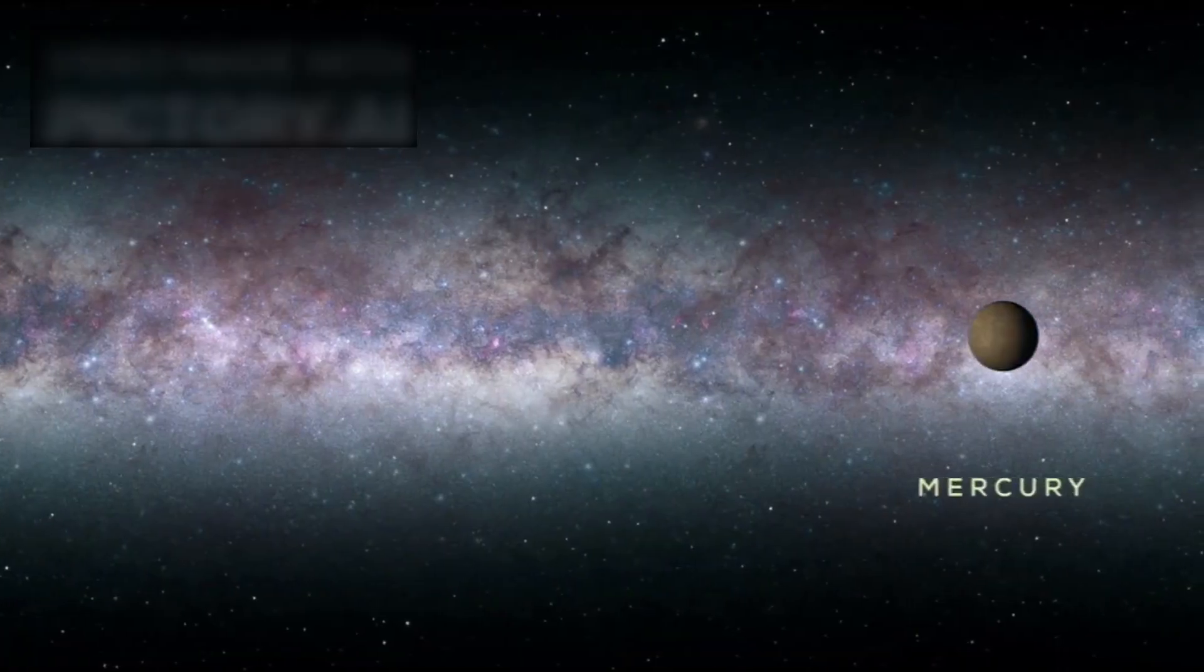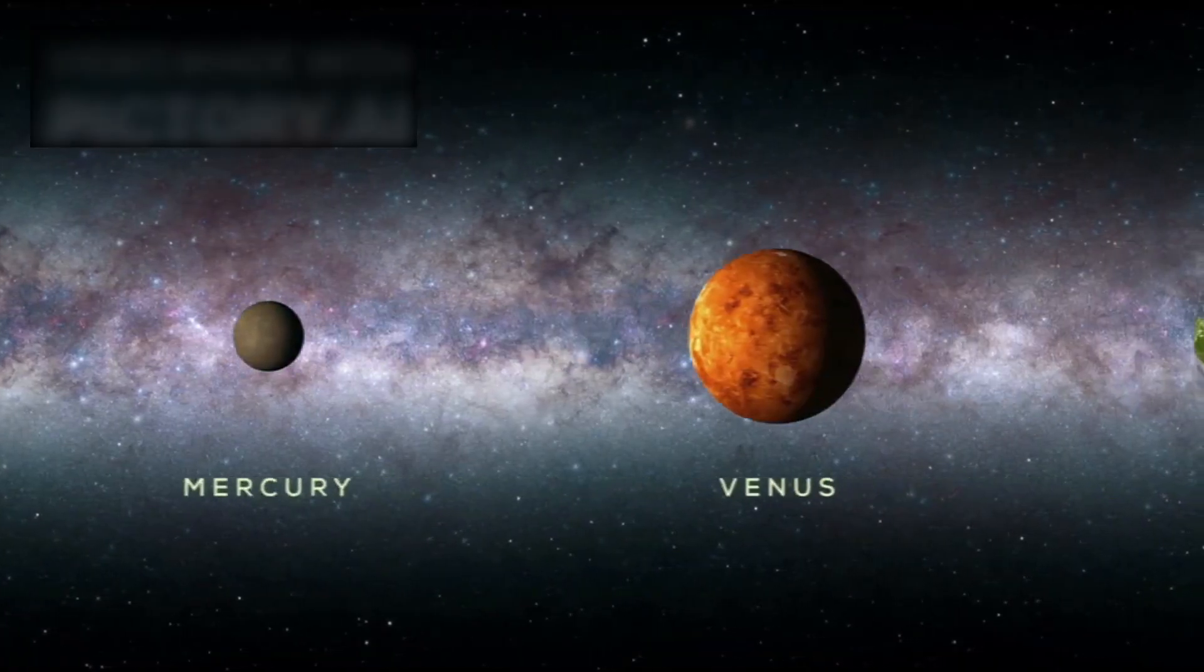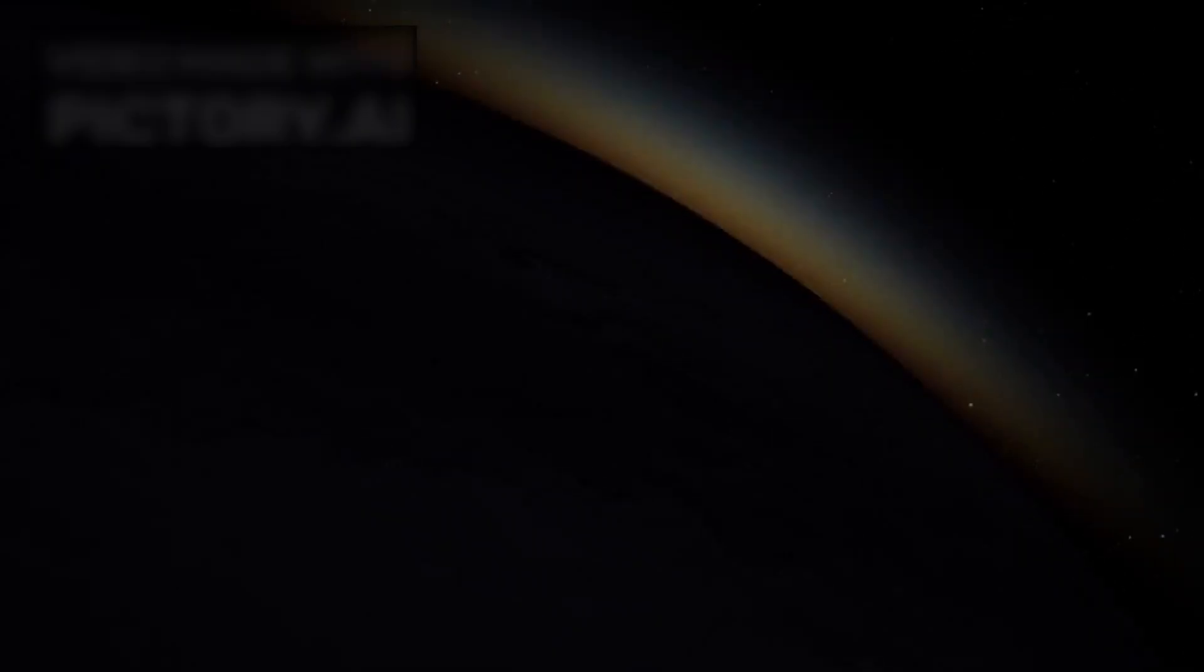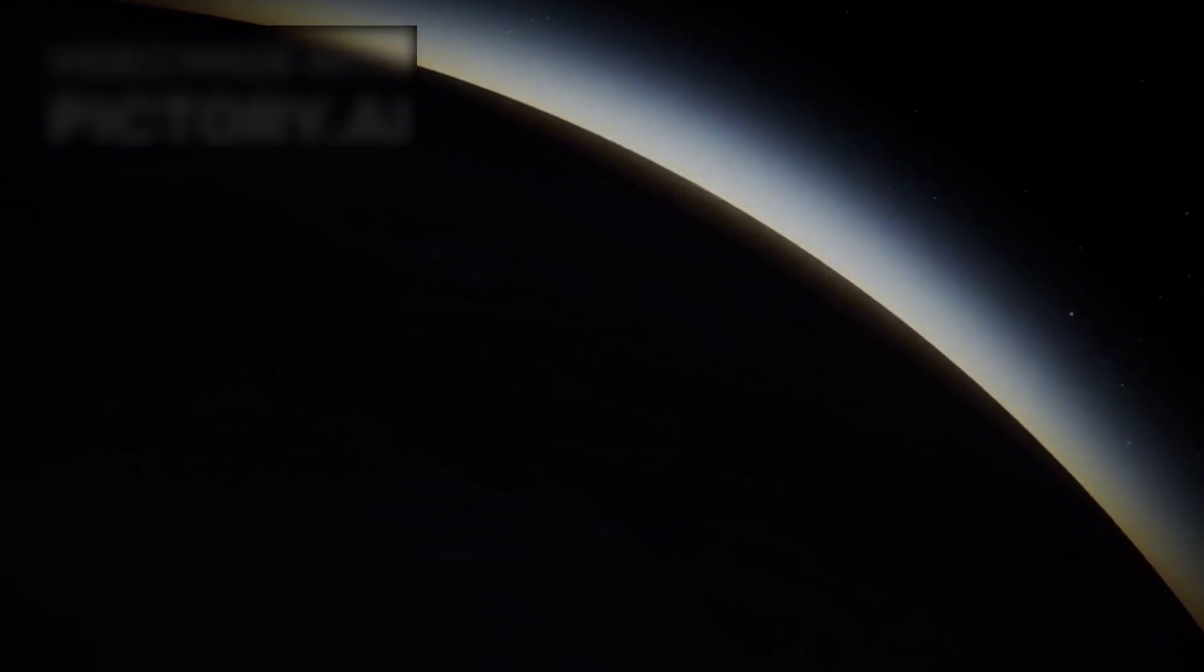K2-18b resides about 120 light years away in the constellation Leo. It is classified as a sub-Neptune, a category of planets larger than Earth but smaller than Neptune. What makes sub-Neptunes particularly intriguing is that they have no direct counterparts in our own solar system. We have rocky planets and we have gas giants, but nothing in between.